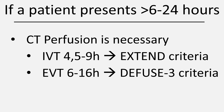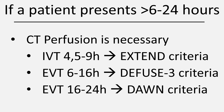The DEFUSE 3 study examined patient selection with perfusion CT for endovascular thrombectomy between 6 and 16 hours, and lastly the DAWN criteria examined patients selected with perfusion CT for endovascular thrombectomy who presented between 6 and 24 hours. In practice, we use the EXTEND criteria for late-presenting patients up to 9 hours for intravenous thrombolysis, the DEFUSE 3 criteria for patients presenting between 6 and 16 hours for endovascular thrombectomy, and the DAWN criteria for patients presenting between 16 and 24 hours with a large vessel occlusion as potential thrombectomy candidates.